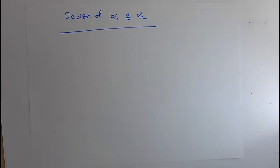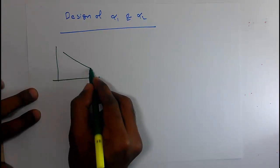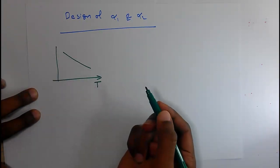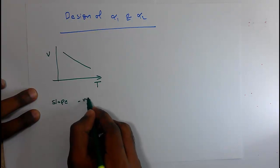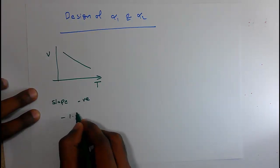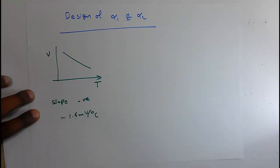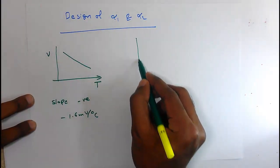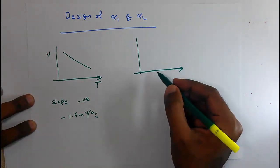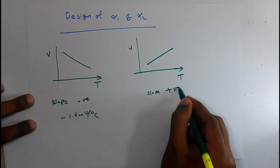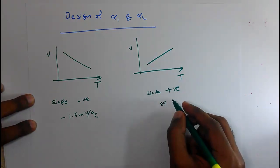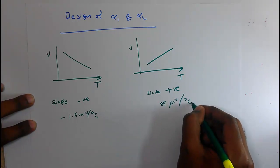We discussed everything regarding the band gap reference except the design of alpha 1 and alpha 2. We designed our CTAT, and found the CTAT voltage is decreasing with respect to temperature. The slope of the CTAT is negative, with a value of minus 1.6 millivolt per degree centigrade. Then we designed PTAT, where the voltage is increasing with respect to temperature, giving a positive slope of about 85 to 87 microvolts per degree centigrade.